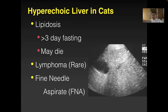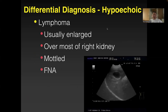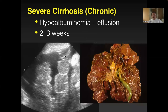In cats, most of the time it's lipidosis due to fasting. If the cat is not eating — very serious condition — do the ultrasound. If it looks white, you really need to do force feeding or the cat may die. For congestion, dilated hepatic veins are the key finding. If the hepatic vein is not dilated and the liver is hypoechoic, that means hepatitis — biopsy is best for hepatitis as FNA may not be enough. Lymphoma can be lucky to catch on FNA.